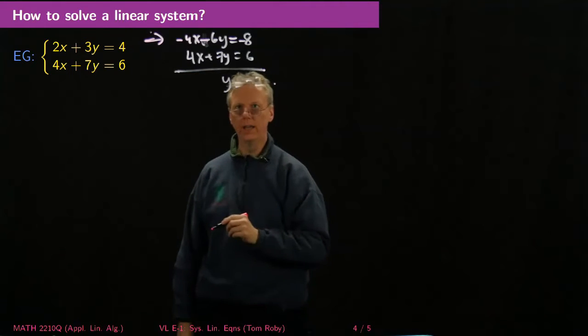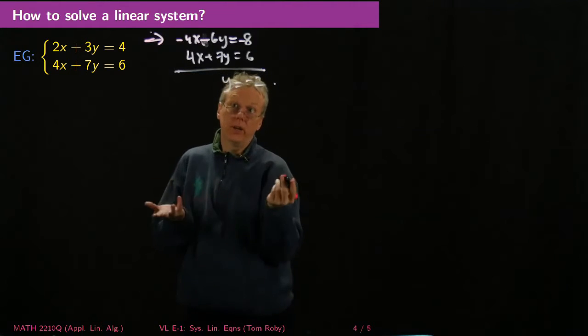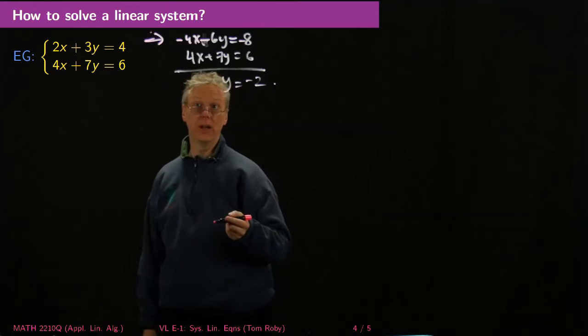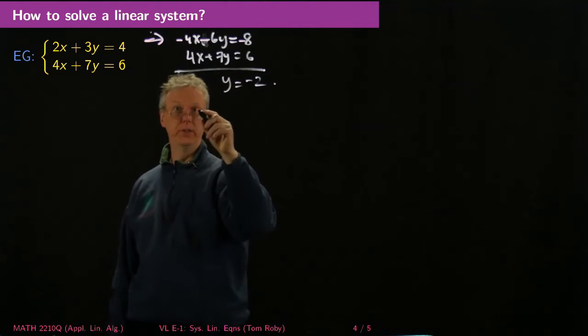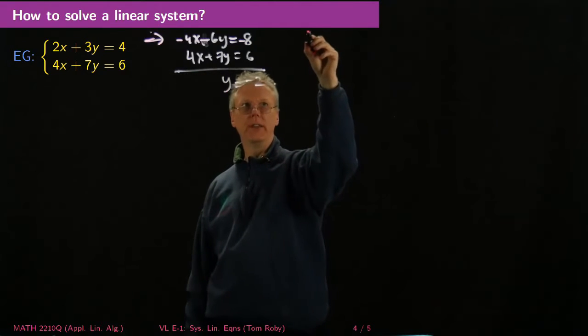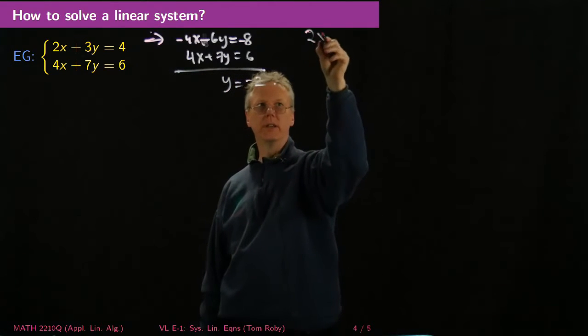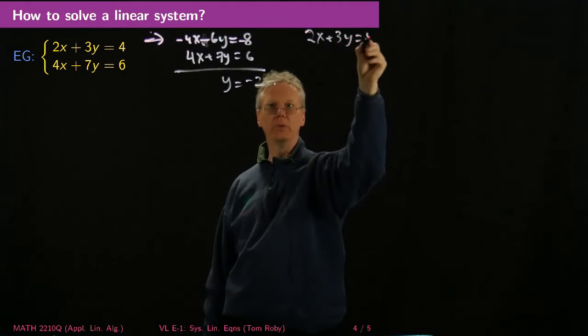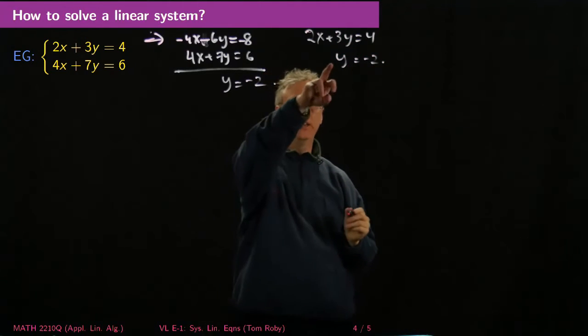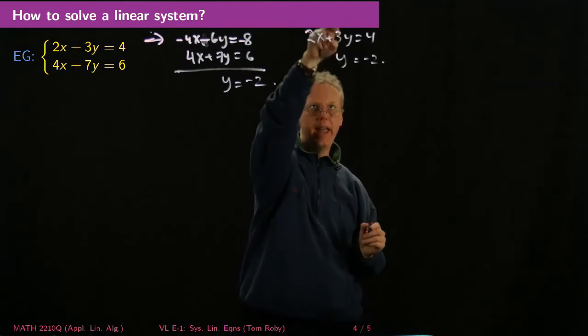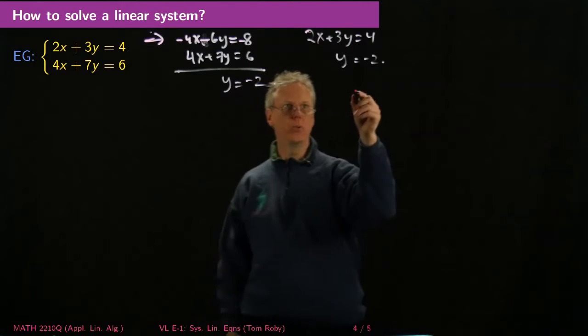So then I've solved for y, and once I know that y = -2, I can go back and solve for x in either of the equations. So this is the way you probably did it in high school. And so I've got, so if I think about my new system of equations as 2x + 3y = 4, and y = -2. Well, if I would multiply this by -3 on each side and add it, then it would simplify that equation, right?